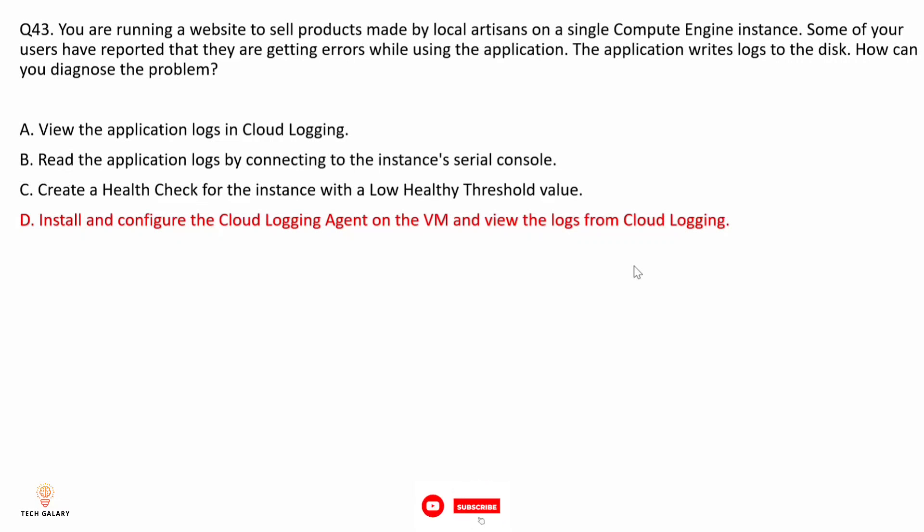Option C: creating a health check with a low threshold value monitors the health and availability of the instance, not for diagnosing application errors, so it does not provide access to the application logs. Option D: install and configure the Cloud Logging agent on the VM and view the logs from Cloud Logging. This is correct because the Cloud Logging agent collects logs written to disk and sends them to Cloud Logging, enabling real-time access to diagnose and troubleshoot errors.